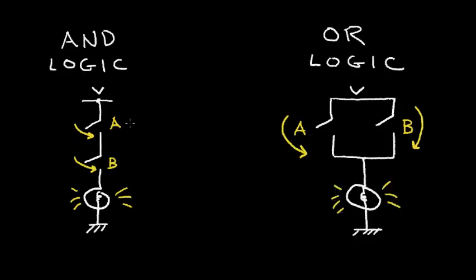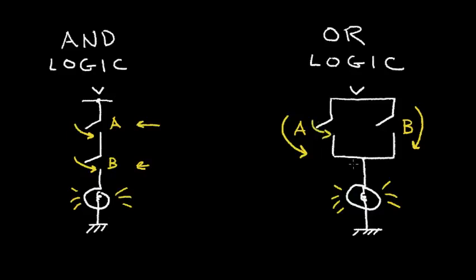OR logic means that I can close this switch OR this switch and have the bulb light up. The AND required both switches to be closed for the event to happen. In the OR logic, it only required one switch to be closed for the event to happen.